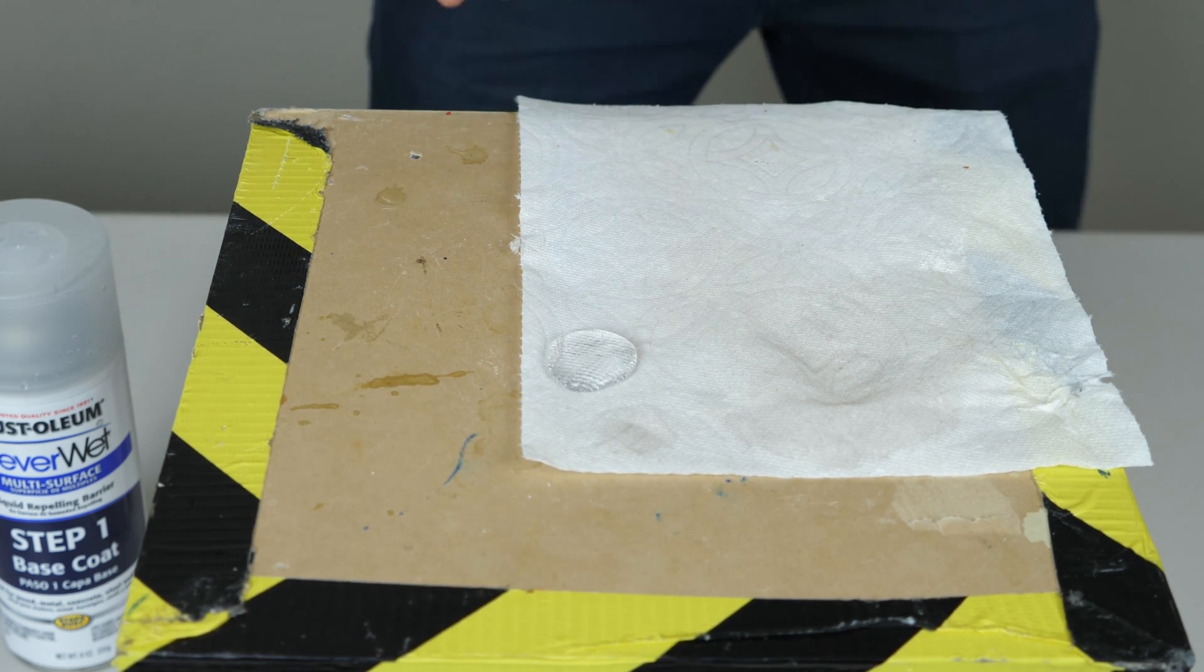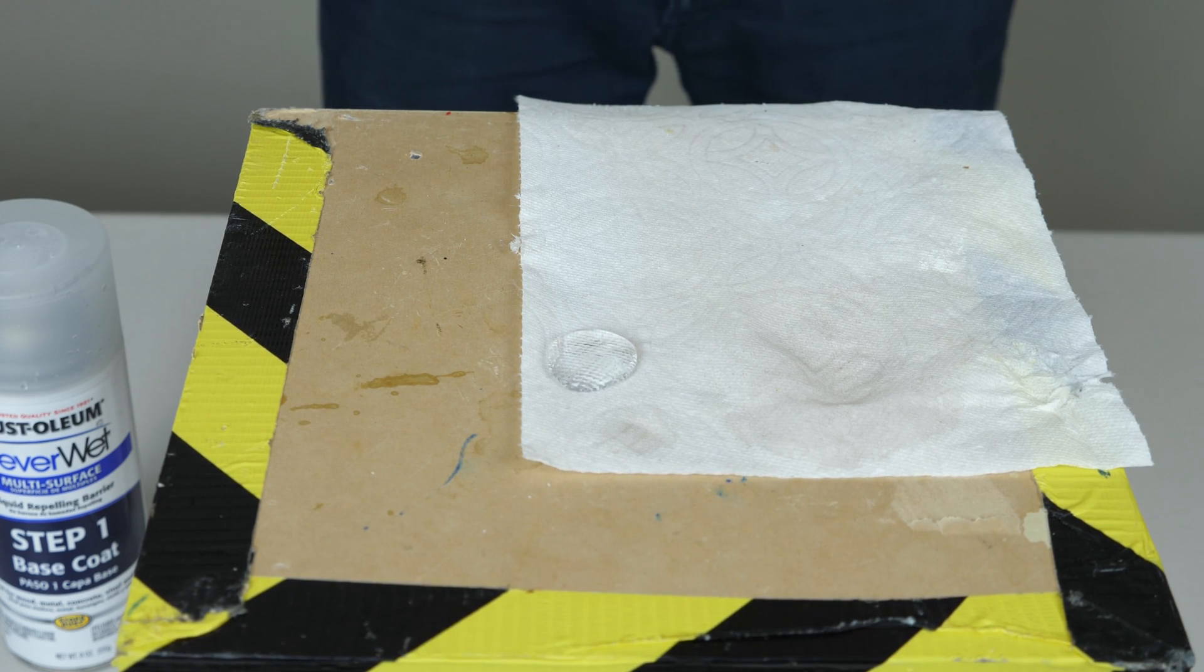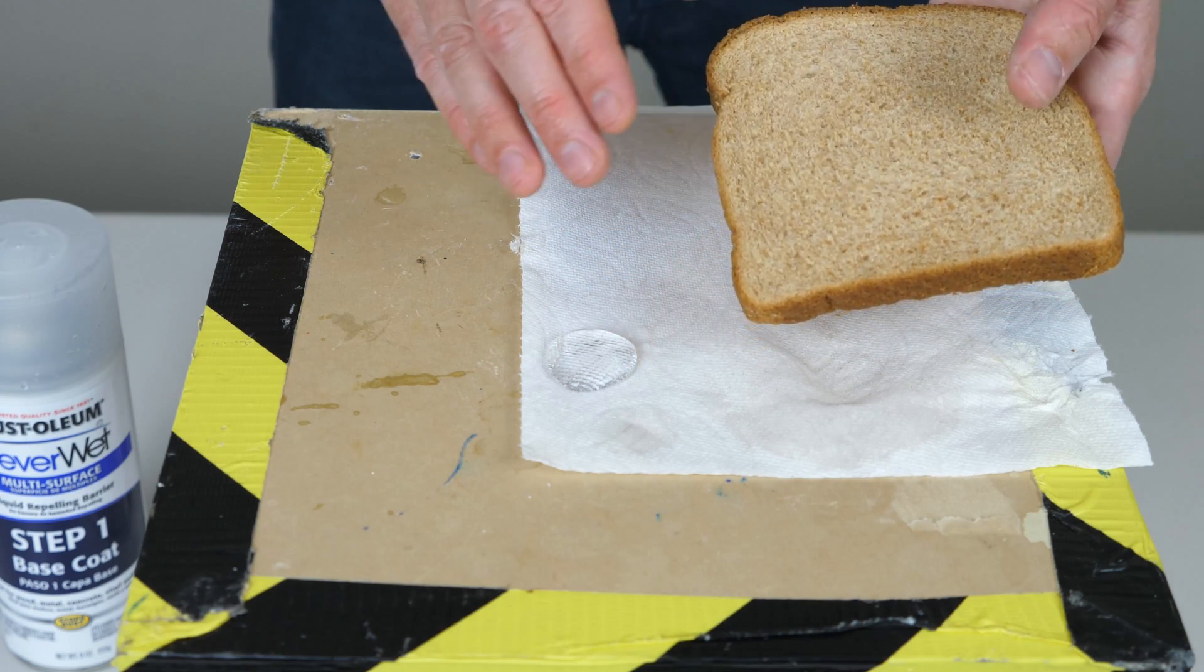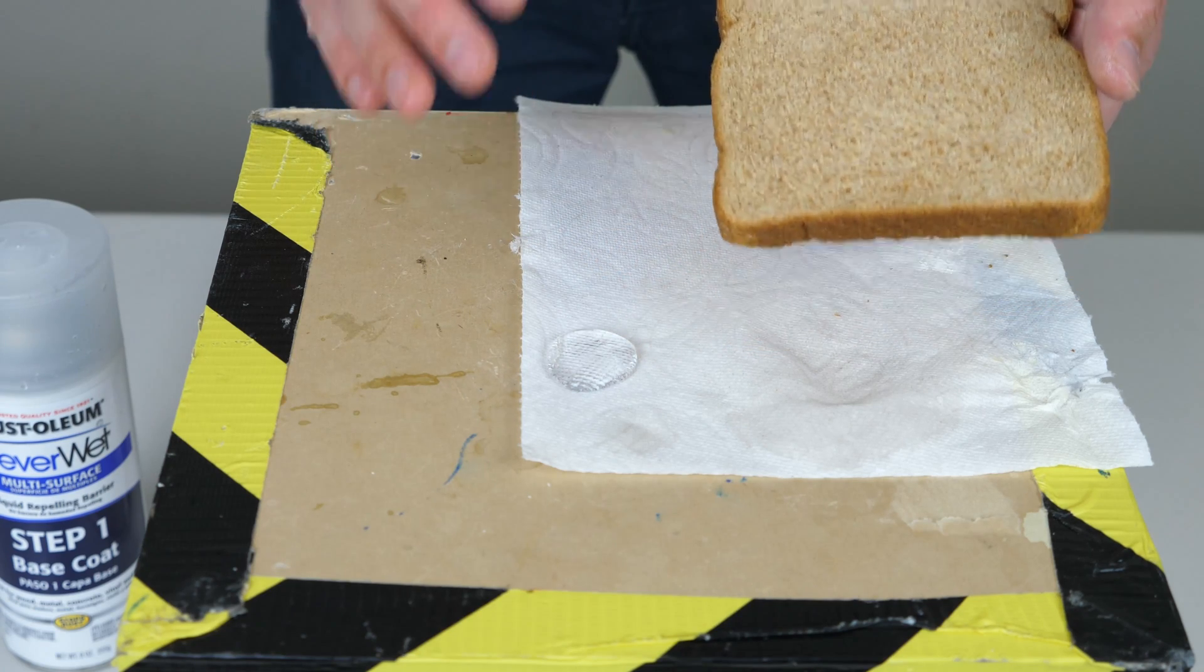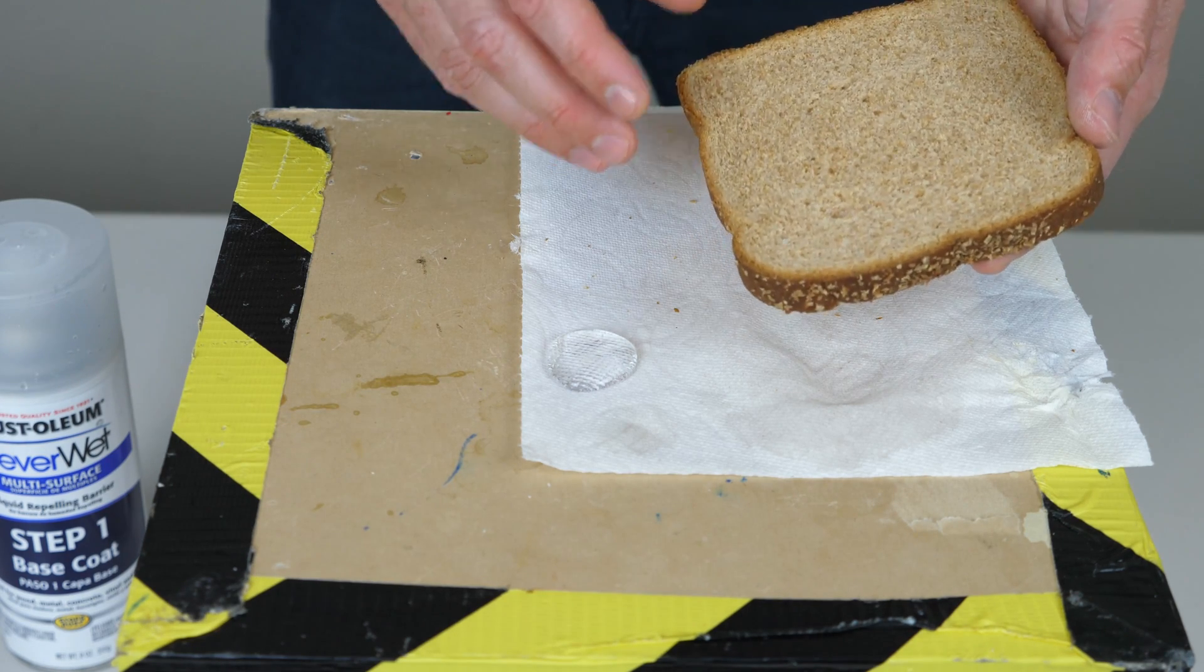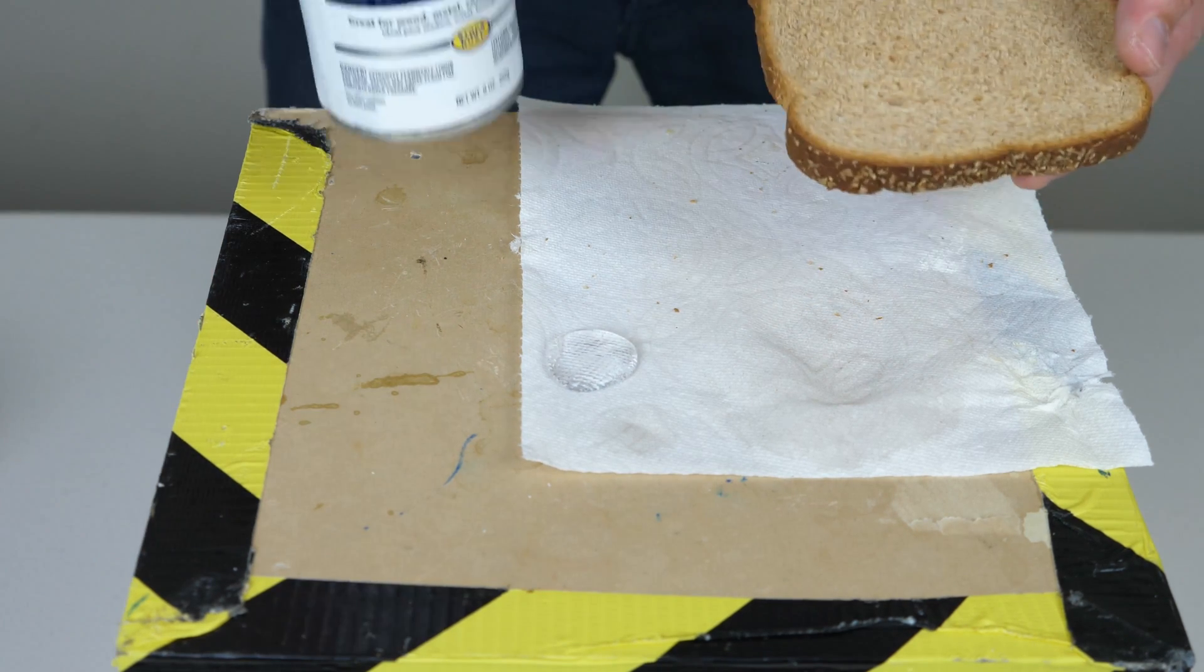And so what I'm going to do with this today is I want to see what would happen if you put NeverWet on bread. Bread has a bunch of tiny little bumps and air pockets in it, and so I think it would make a really good hydrophobic surface. I want to see if you could actually repel water that's on bread if you spray NeverWet on it.